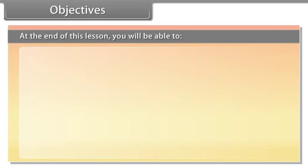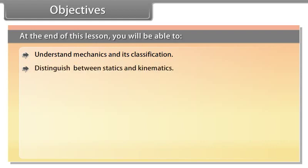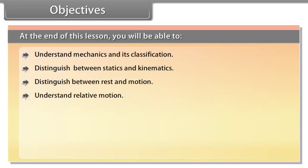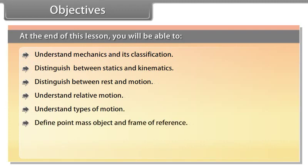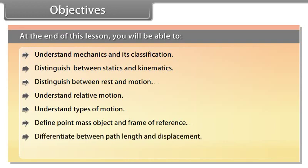Objectives: At the end of this lesson you will be able to understand mechanics and its classification, distinguish between statics and kinematics, distinguish between rest and motion, understand relative motion, understand types of motion, define point mass object and frame of reference, and differentiate between path length and displacement, and the difference between speed and velocity.